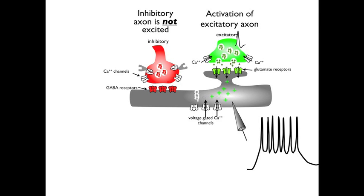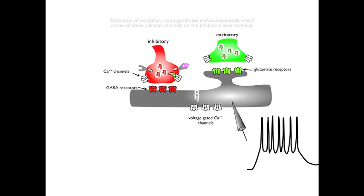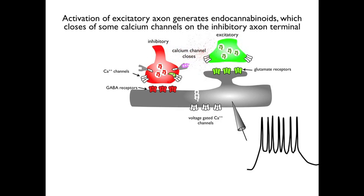The strong depolarization then opens voltage-gated calcium channels, and the influx of calcium into the postsynaptic cell triggers the synthesis of endocannabinoids from a lipid precursor in the membrane. The endocannabinoids then diffuse out of the postsynaptic cell to activate the CB1 receptors on the axon terminal of the inhibitory fiber. The activated G-protein on the CB1 receptor then closes some, but not all, of the voltage-gated calcium channels on the axon terminal.